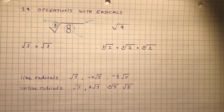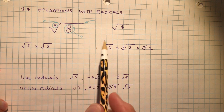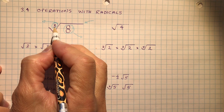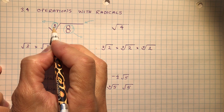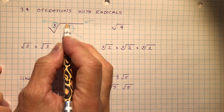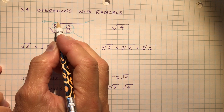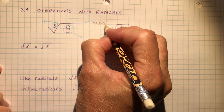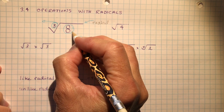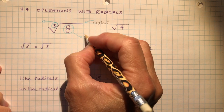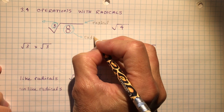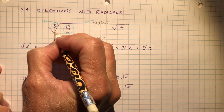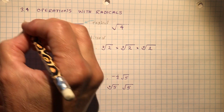We have to know what parts of these are called. This number here tells you which root you're going to take of the number that's under the sign. This sign is called the radical sign. The number that's under the radical sign is called the radicand.